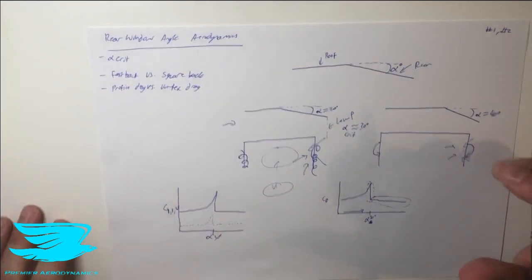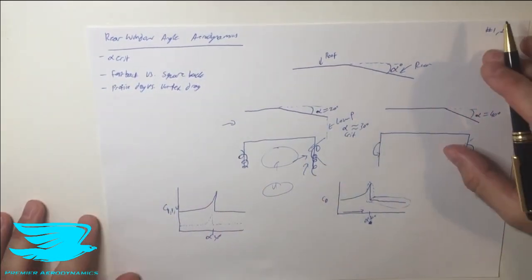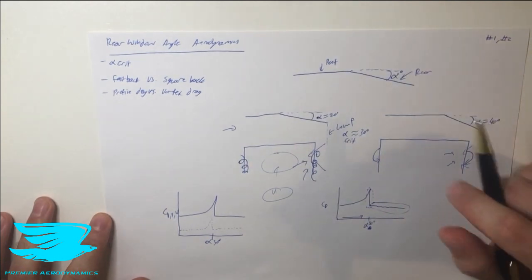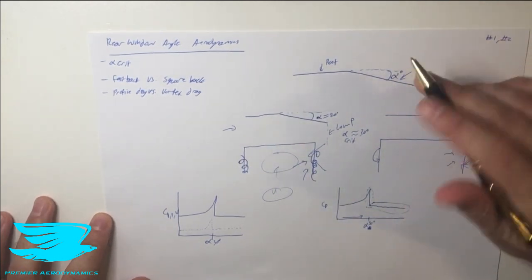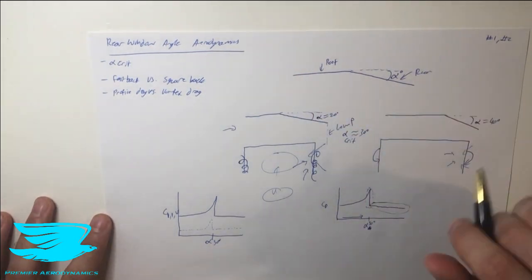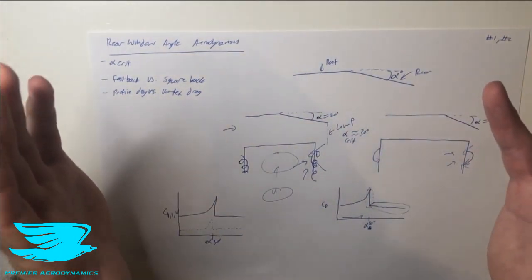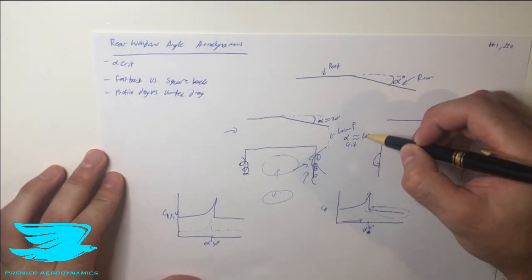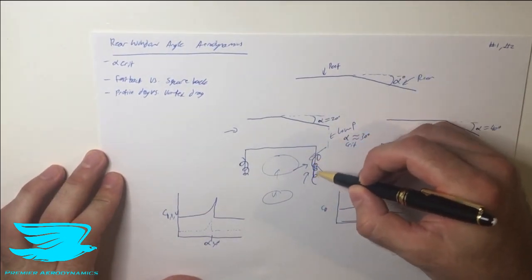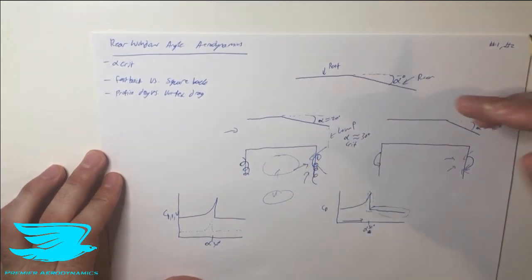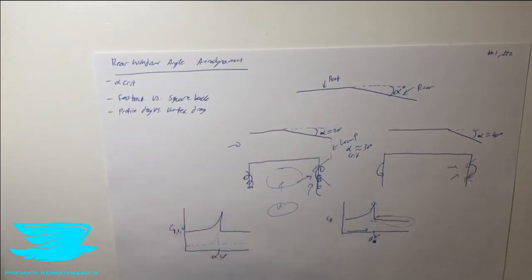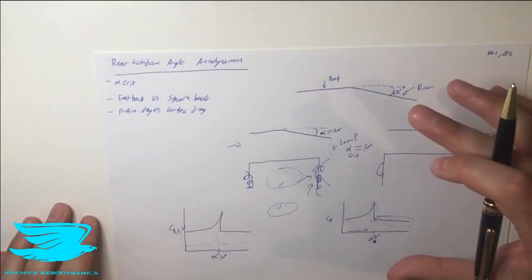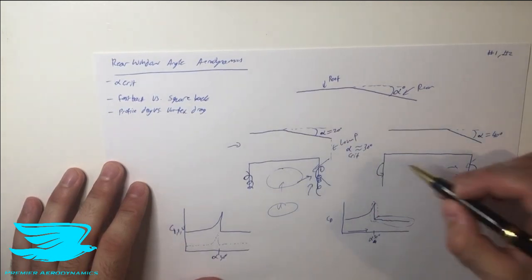To recap: changing the rear window angle — the angle between the roof and the window — dramatically changes the aerodynamics of the car. An angle below the critical angle (around 30 degrees) is a fastback, producing very strong longitudinal vortices on each side. As we increase the angle toward 30 degrees, these vortices get stronger and stronger, until at the critical angle they pop.